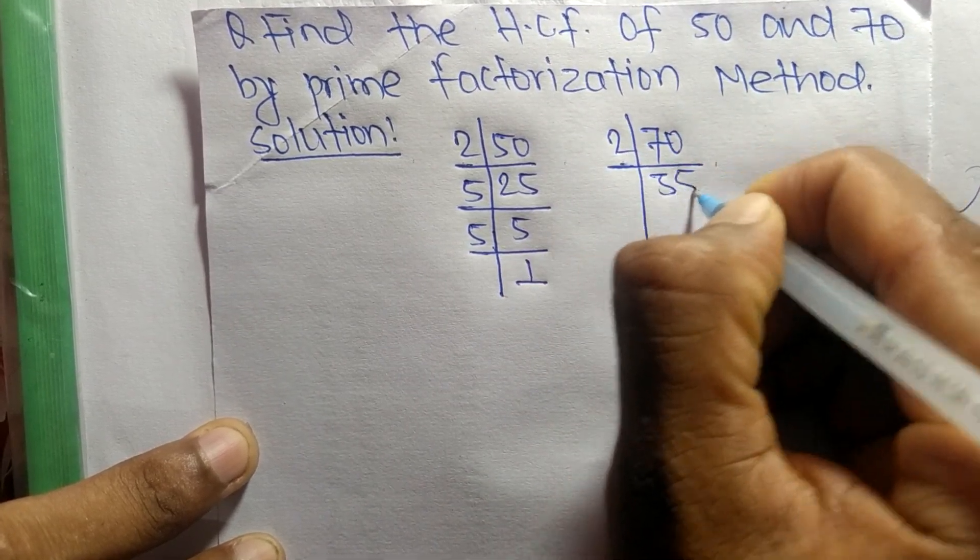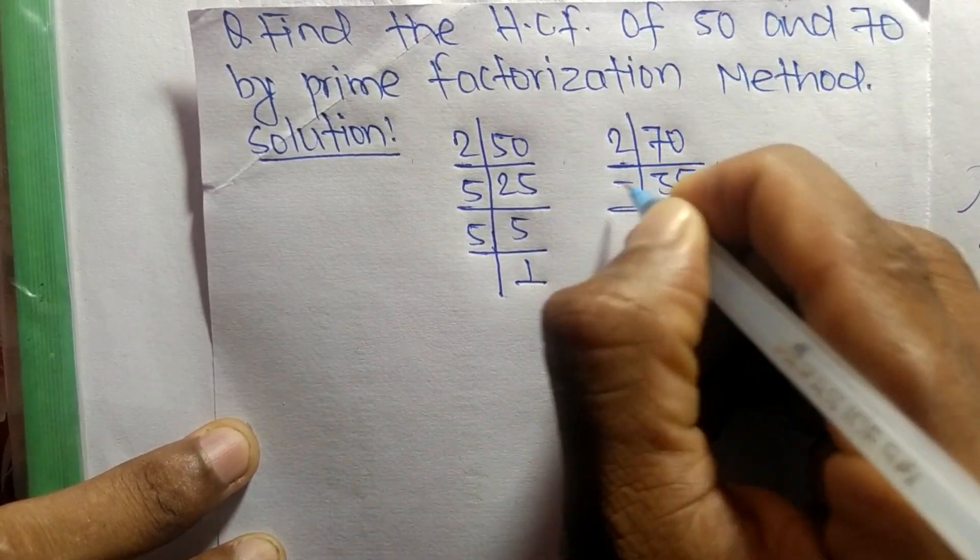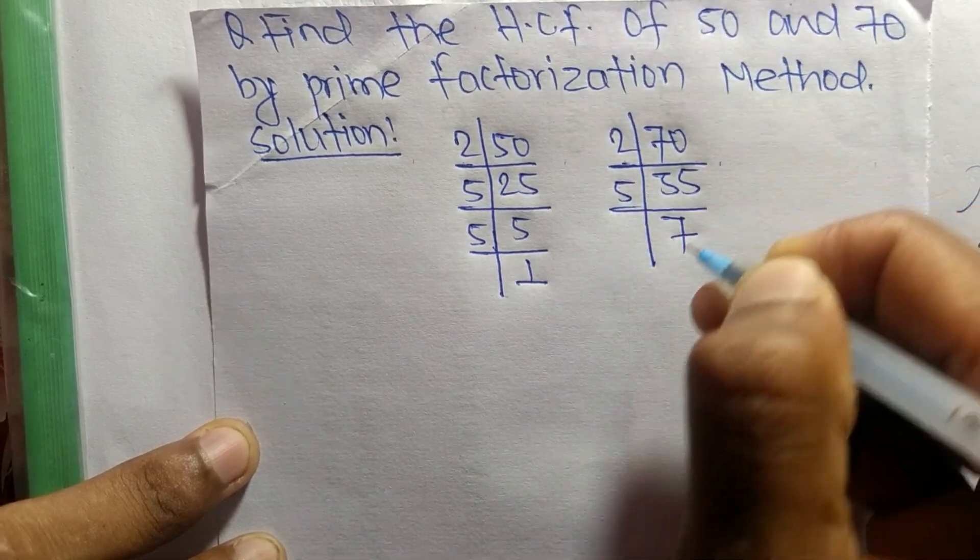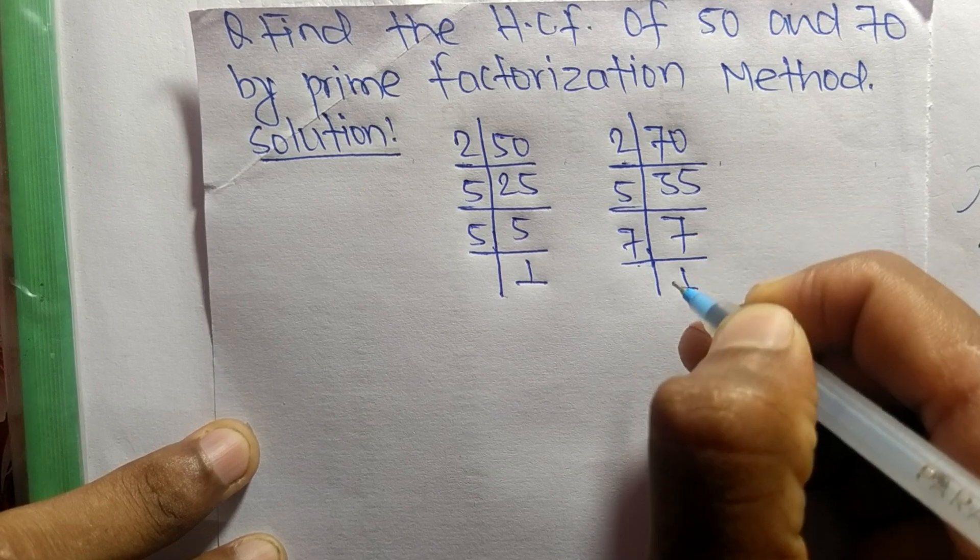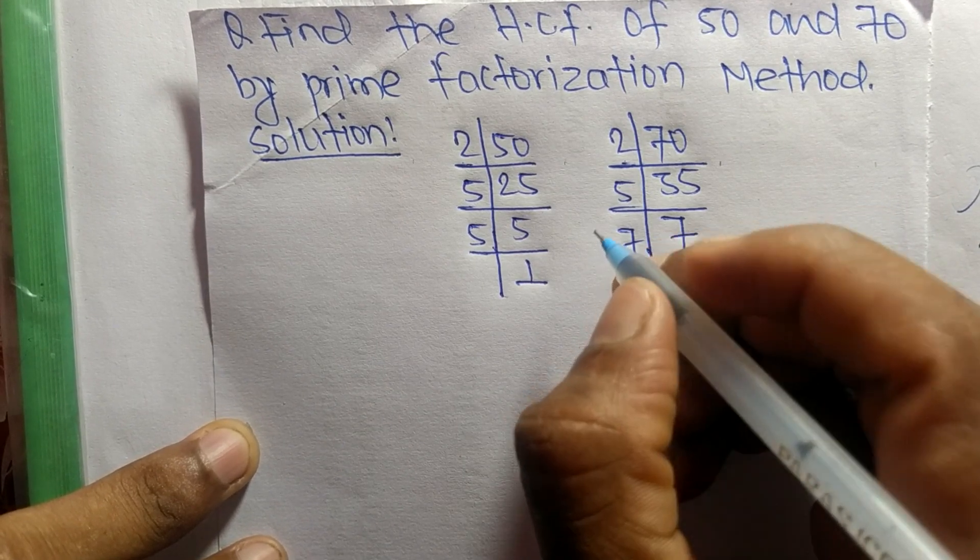5 times 7 equals 35, and 7 times 1 equals 7. So now from these prime factors,